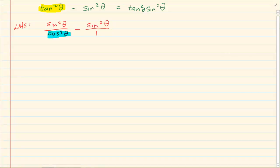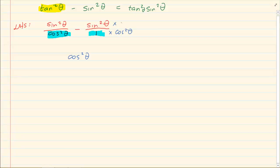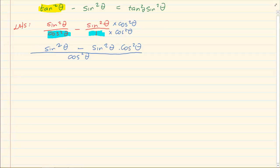We know everything is sin and cos so we do algebra. We have a denominator, so the common denominator will be cos squared theta. The first term already has cos squared theta in the denominator, so I leave it. For the second term, I multiply both numerator and denominator by cos squared theta. What we are left with on top is sin squared theta minus sin squared theta times cos squared theta. Taking out the common sin squared theta, we get sin squared theta times the quantity 1 minus cos squared theta, all over cos squared theta.